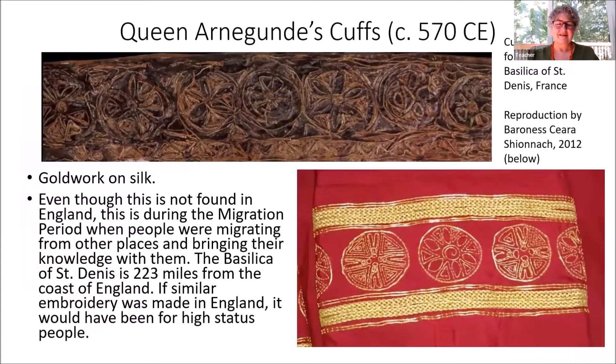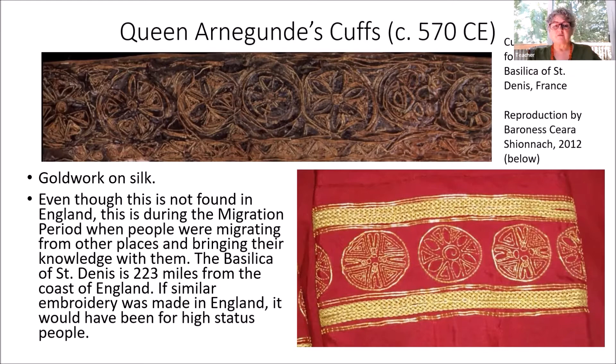Here we have another continental equivalent. This is Queen Arnegan's Cuffs from about 570, found at the Basilica of Saint Denis in France, and Ascadian did a reproduction of it shown below. This was gold work on silk. Even though this is not found in England, this is during the migration period when people were bringing their knowledge with them. The Basilica of Saint Denis is only 223 miles from the coast of England, so if somebody made that trip, they could have brought their skills. If this had been embroidered in England, it would have been for somebody of very high status.